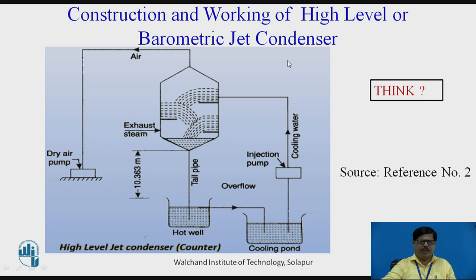The working of this condenser is similar to the low-level jet condenser, with the difference that because the condensing chamber is placed at a very high level, the vacuum produced inside is not sufficient to draw cooling water from the pond. Therefore, an injection pump is required for supplying cooling water into this high-level jet condenser. The water is sprayed and strikes baffle plates arranged in a zigzag manner, and the exhaust steam flows from bottom to top. The exhaust steam and cooling water mix, and the condensate exits through the tailpipe due to gravity, as the height provided is more than the barometric head. The air pump suction is connected at the top for removal of air.